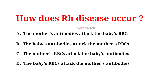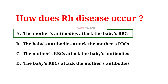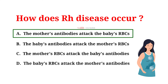How does Rh disease occur? A. The mother's antibodies attack the baby's RBCs. B. The baby's antibodies attack the mother's RBCs. C. The mother's RBCs attack the baby's antibodies. D. The baby's RBCs attack the mother's antibodies. And the correct answer is A: the mother's antibodies attack the baby's RBCs. Rh disease occurs when a mother who is Rh negative carries a fetus who is Rh positive.